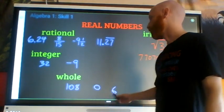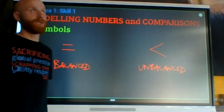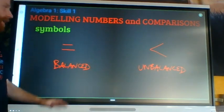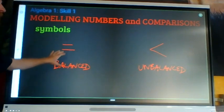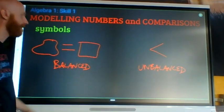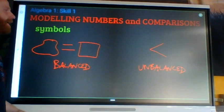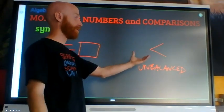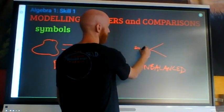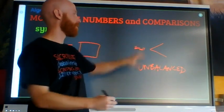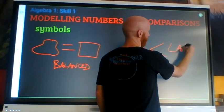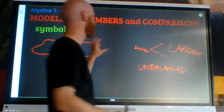I'm not going to limit us to whole numbers and integers. Two main symbols that we use to represent comparisons between real numbers would be the equal sign, which would represent balance. Whatever is on the left of the equal sign has the same value as what is on the right. And then we have this symbol here, which would represent unbalance. So balance and unbalance.